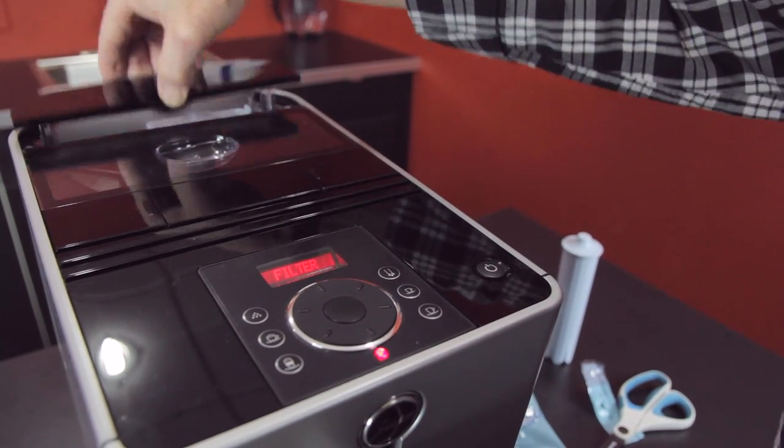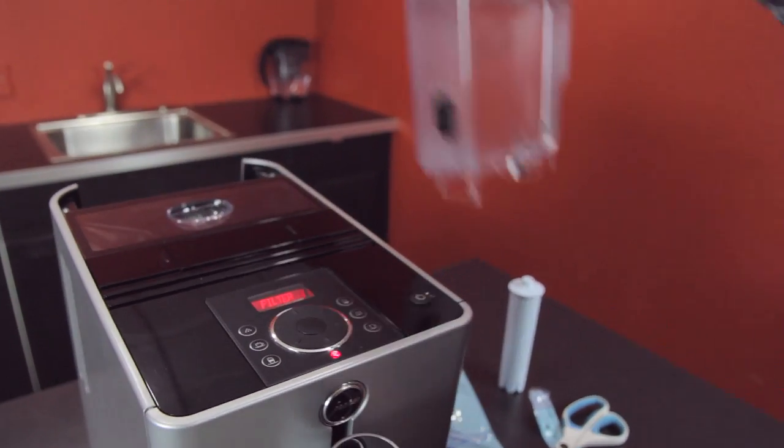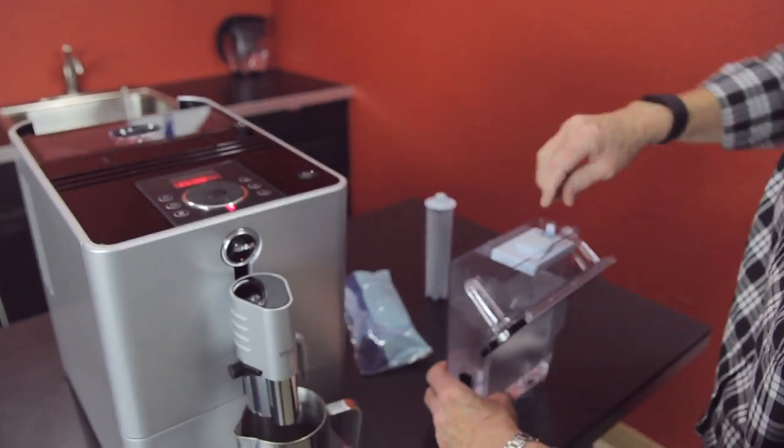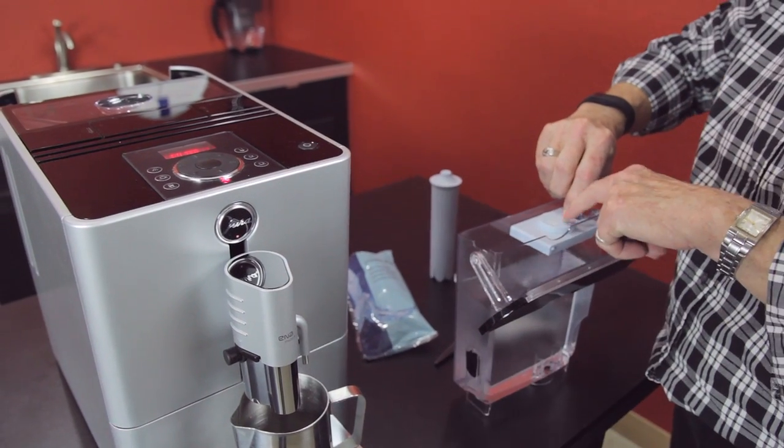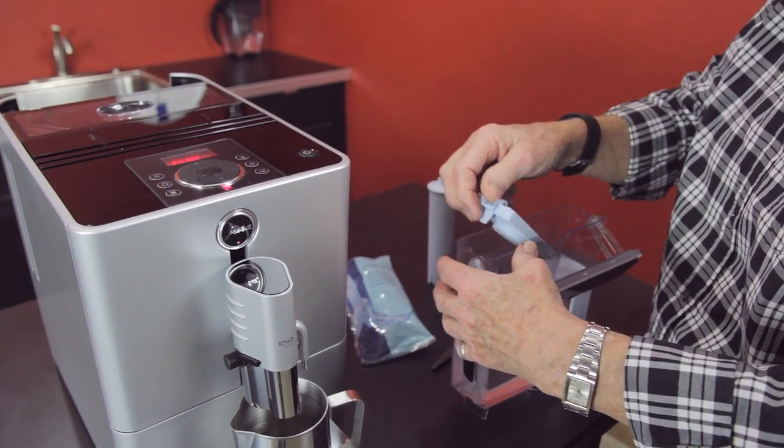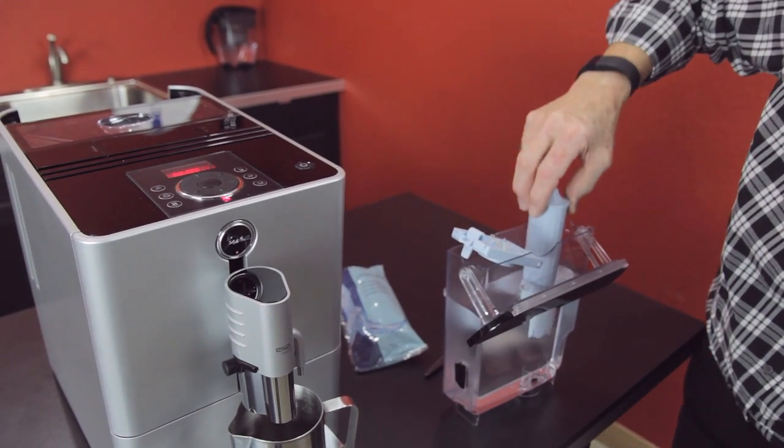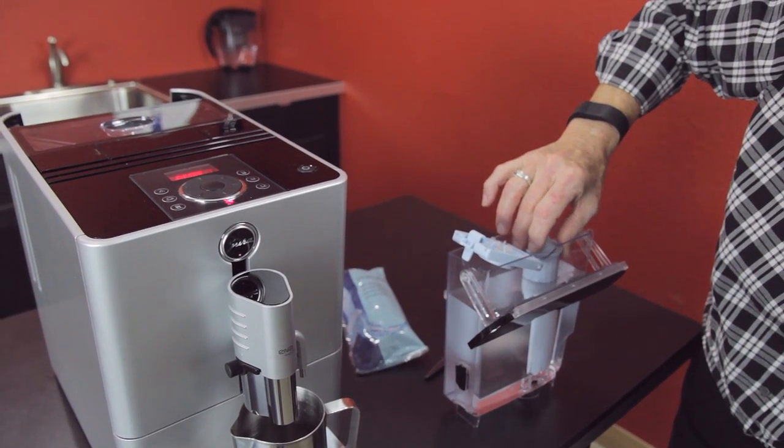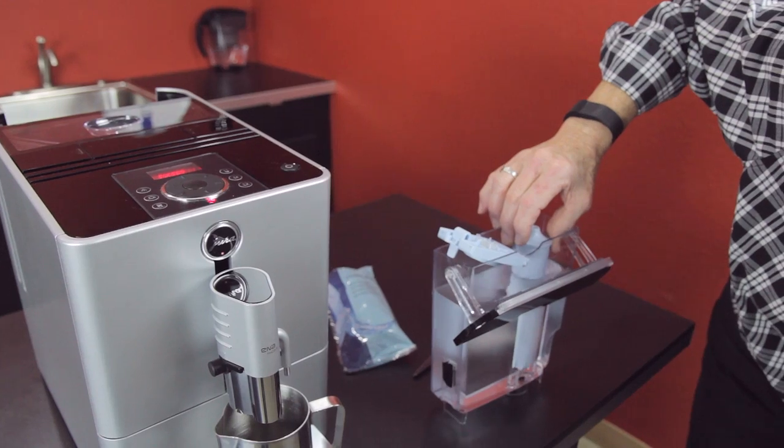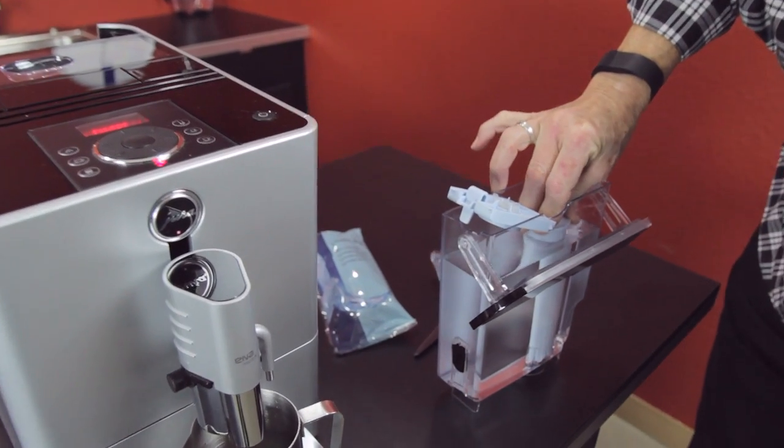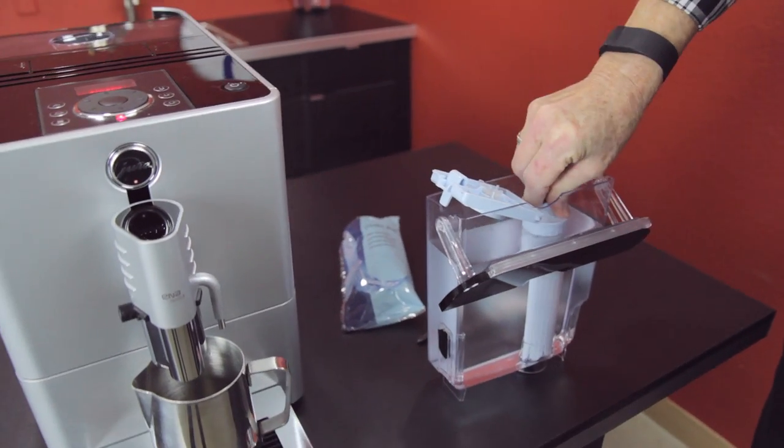Now it's telling me to insert the filter back here in the water tank. And that's what we're going to do. There's a indicator up here too where you can put in what month you put it in. You're supposed to change these every two months. Let's get this down in here. A little bubble came out.